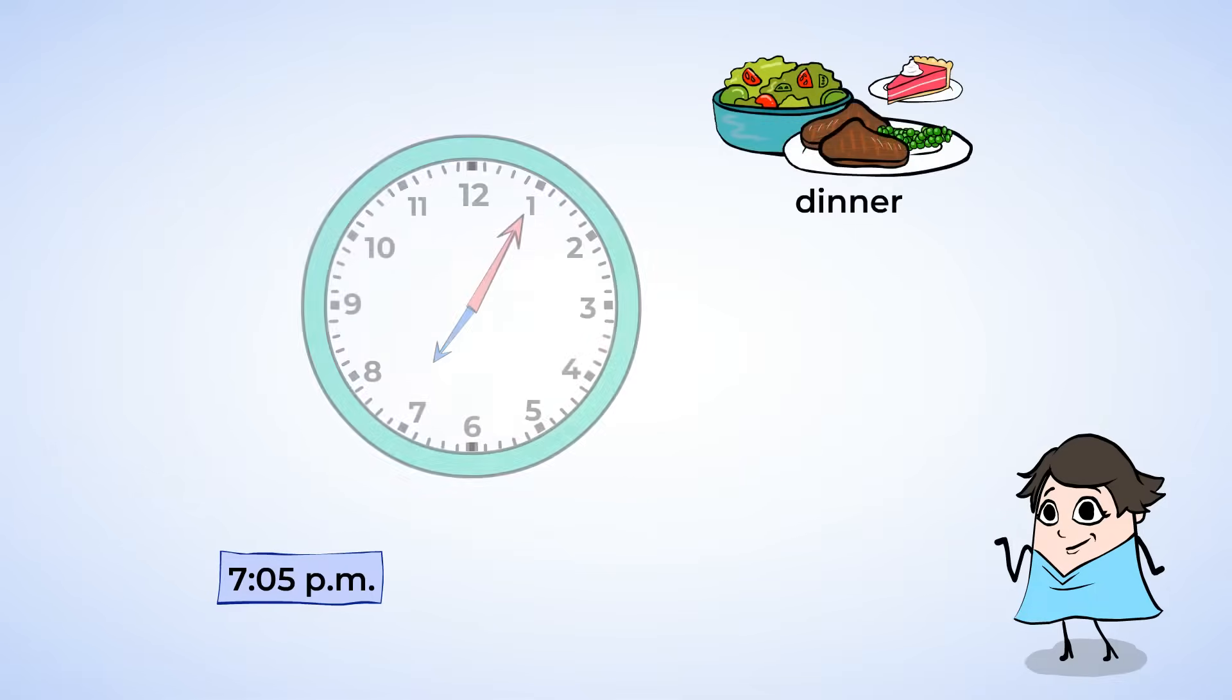Finally, dinner time. And there's only one choice left, 7:05 p.m., but let's make sure it makes sense. The hour hand is just past the 7, and the minute hand is on the 1, which means 5 minutes. And dinner is in the evening, so the p.m. is right. Nice!